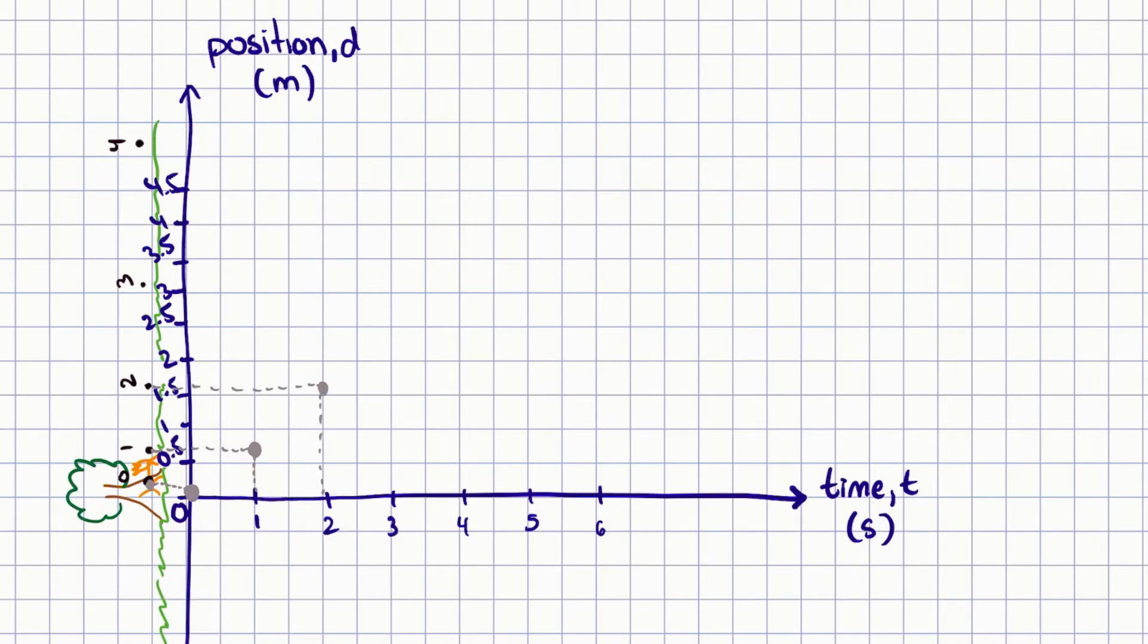We continue doing this for the rest of the times. Once we have a few data points for the position versus time graph, we want to find the curve of best fit. Notice here it won't be such a linear relationship, so we're going to try to make the curve of best fit.